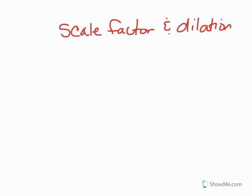Scale factor. In order for an image to have been dilated, a scale factor was applied. When we apply a scale factor, that means that either each line of that image or each point, if it's on a coordinate plane, has been multiplied by the scale factor. Now if we're being asked to find the scale factor, the opposite of multiplication is division — so the inverse operation means we need to create a division problem.